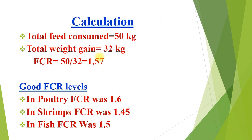Here is a simple example to understand the calculation. Total feed consumed equals 50 kg, and total weight gained equals 32 kg. So FCR equals total feed given divided by total weight gain: 50 divided by 32 equals 1.57 FCR. Good FCR levels are: poultry 1.6, shrimp 1.45, fish 1.5.